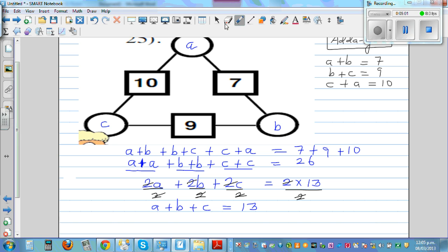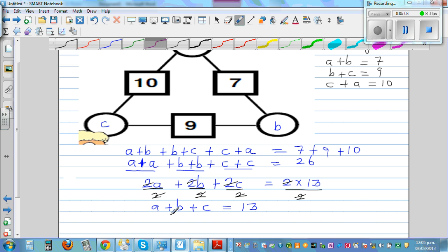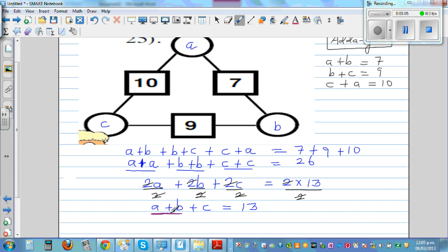Now what can we do? What is A plus B? A plus B is 7. So in place of A plus B I can put 7, so 7 plus C is equal to 13. So C has to be 6. So you can write 6 here.